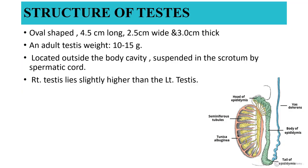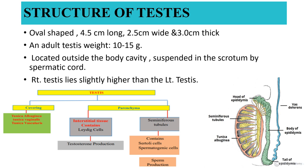The testis is oval in shape, 4.5 cm long, 2.5 cm wide, and 3 cm in thickness. An adult testis weighs about 10–15 grams. It is located outside the body cavity, suspended in the scrotum by the spermatic cord. The right testis lies slightly higher than the left. The parenchyma of the testis is surrounded by fibrous connective tissue and covered by three layers: tunica albuginea, tunica vaginalis, and tunica vascularis.